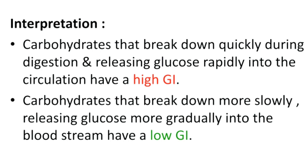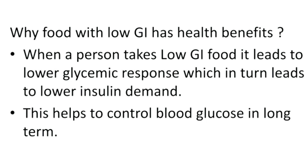When a person takes high GI food, the blood glucose level increases rapidly. When a person takes food with a low GI value, the blood glucose level is not fluctuated rapidly — it rises slowly. Low GI has health benefits: it leads to a lower glycemic response, which in turn leads to lower insulin demand.